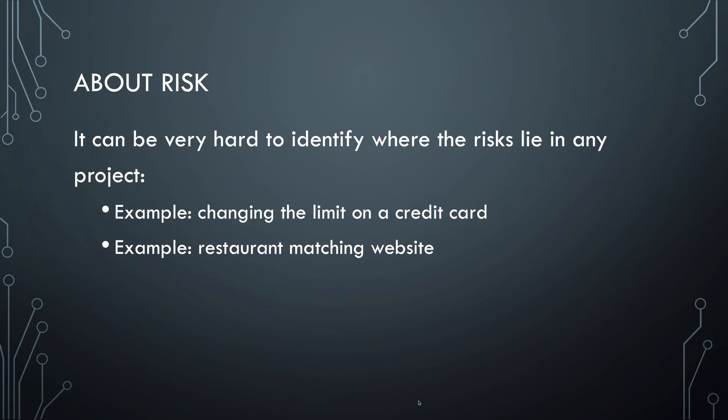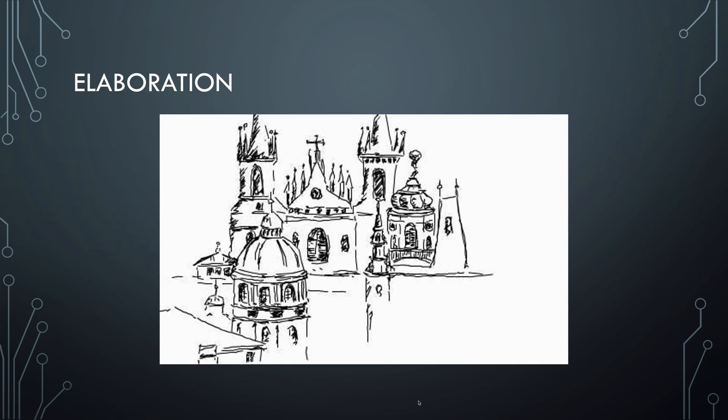If you want to allow functionality where the customer can change the limit of their credit card in the system, you also need good protection so that criminals cannot abuse this. If you have a restaurant search website, you need to make sure that information about life-threatening allergies is correct — otherwise you may endanger people's lives. So much about inception. Let's move on to the second phase: elaboration.